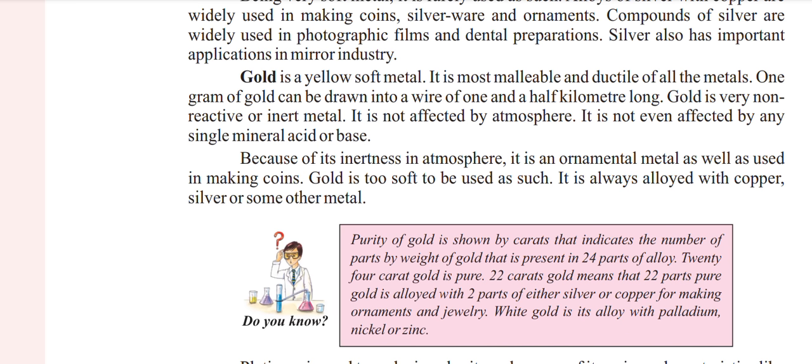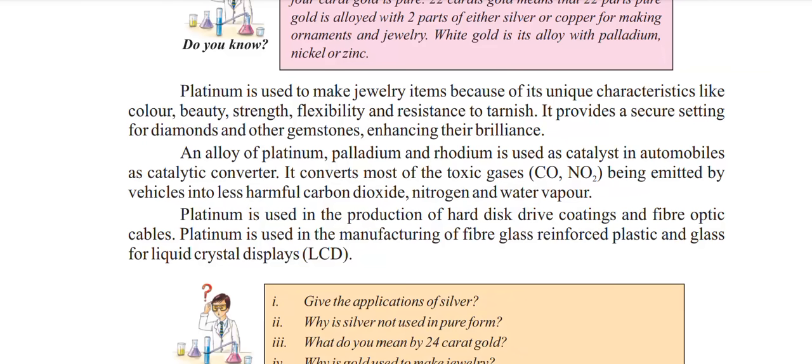White gold is also used to make jewelry items because of its unique characteristics like color, beauty, strength, durability, and luster. It provides secure settings for diamonds and other gemstones. An alloy of platinum and palladium is used as a catalytic converter in automobiles.